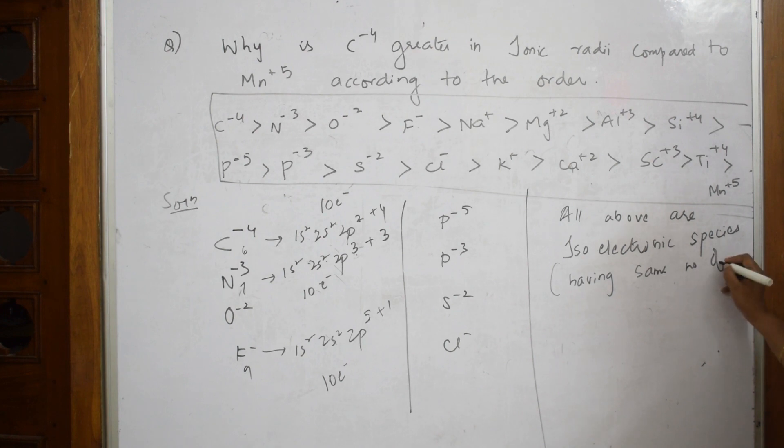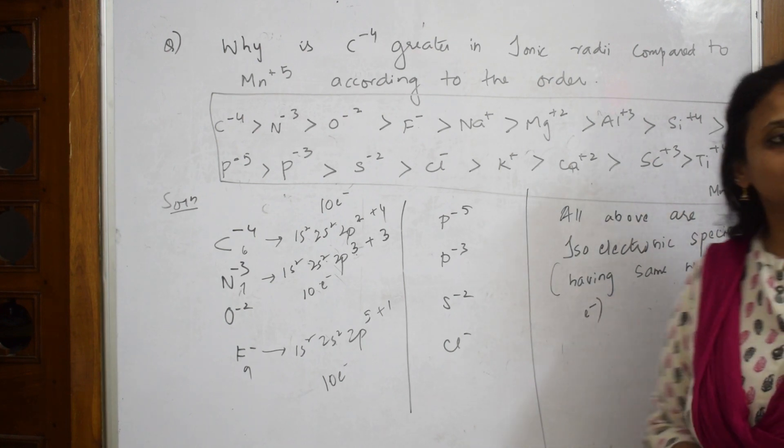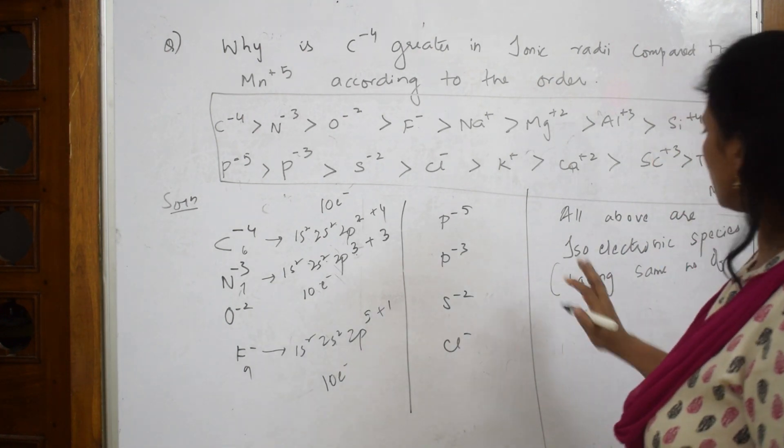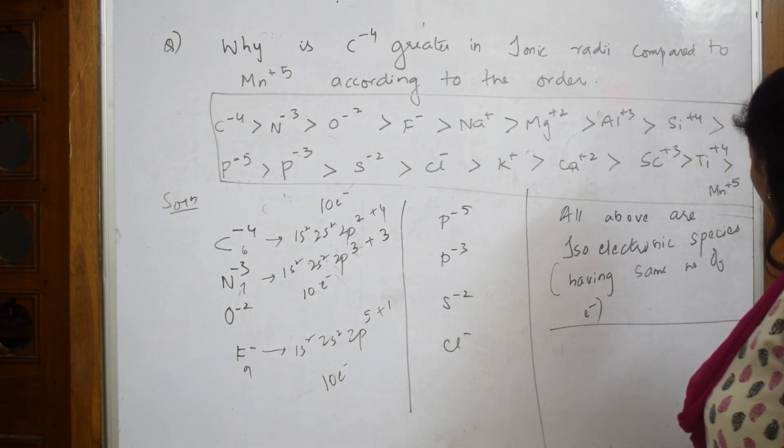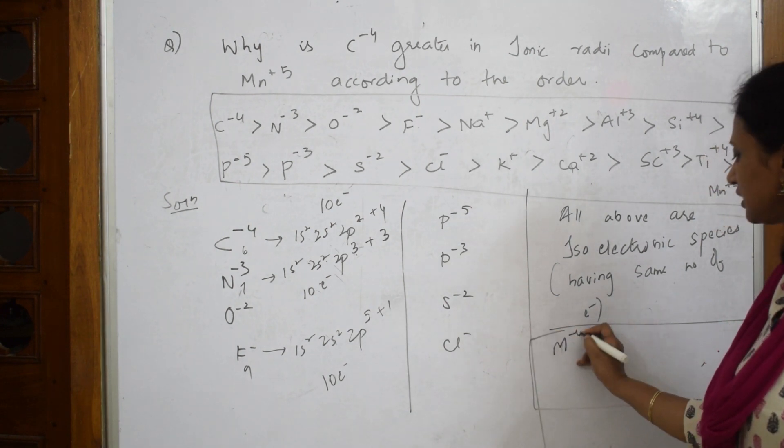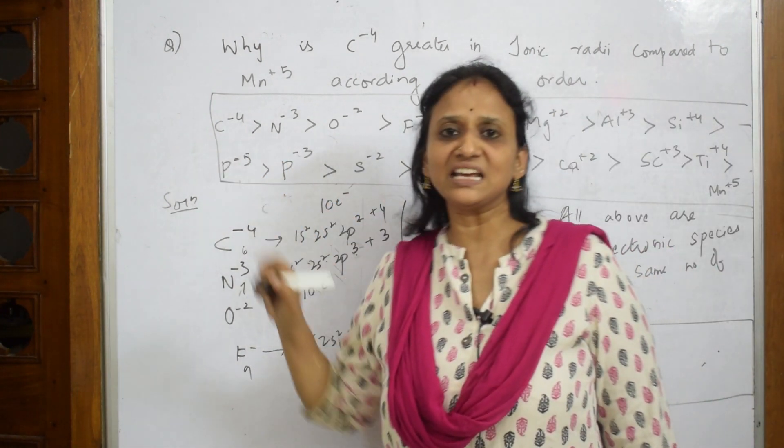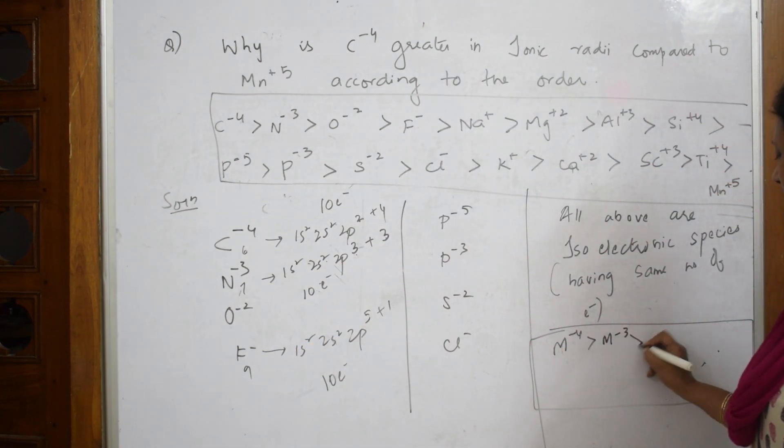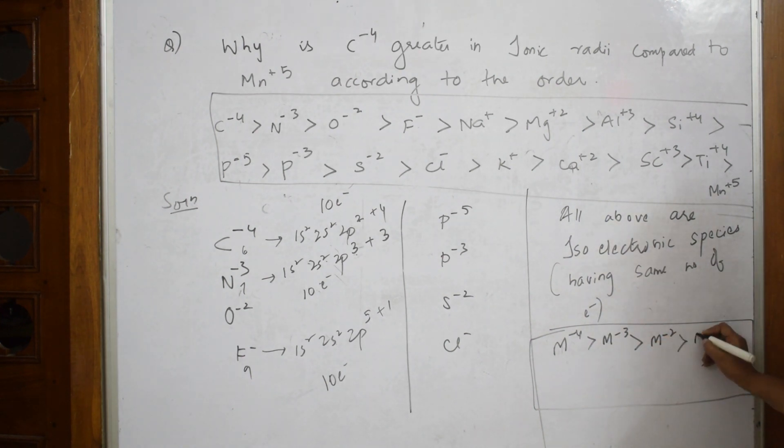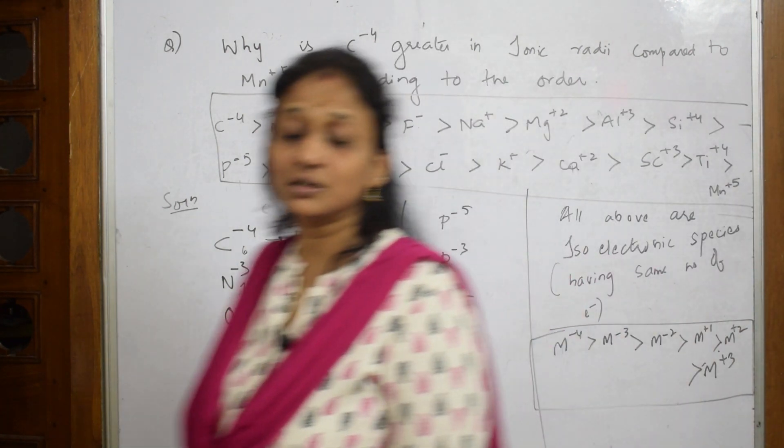According to this concept, what is the order for isoelectronic species? The order is always M^-4 greater than M^-3 greater than M^-2, these are elements, greater than M^+1 greater than M^+2 greater than M^+3 greater than M^+4 greater than M^+5. So according to this order, C^-4 is greater than Mn^+5.